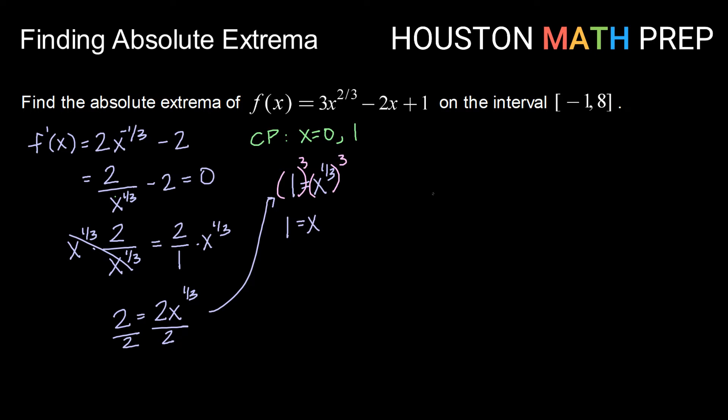Now what I want to do is I want to evaluate my f of x function at each endpoint, negative 1 and 8, as well as at each critical point. You might find that making a table of values helps you stay organized during this process. So placing those values, doesn't really matter what order, I like to go in numerical order, I get negative 1, 0, 1, and 8. And then for each one of those, I'm just going to plug it in to the original function and find the y value associated with it.